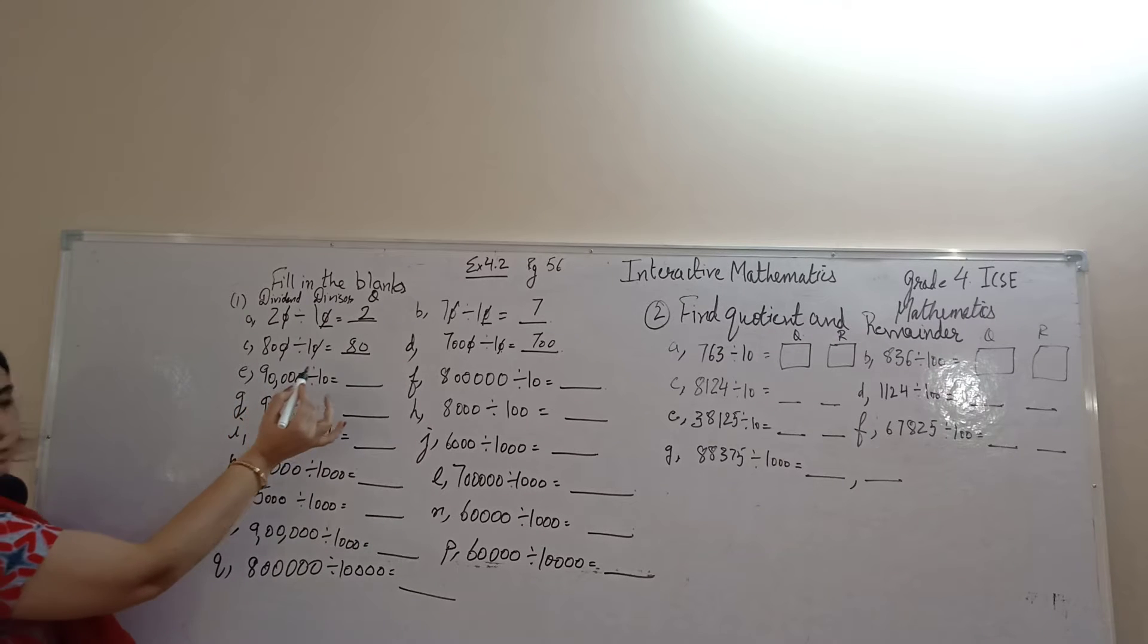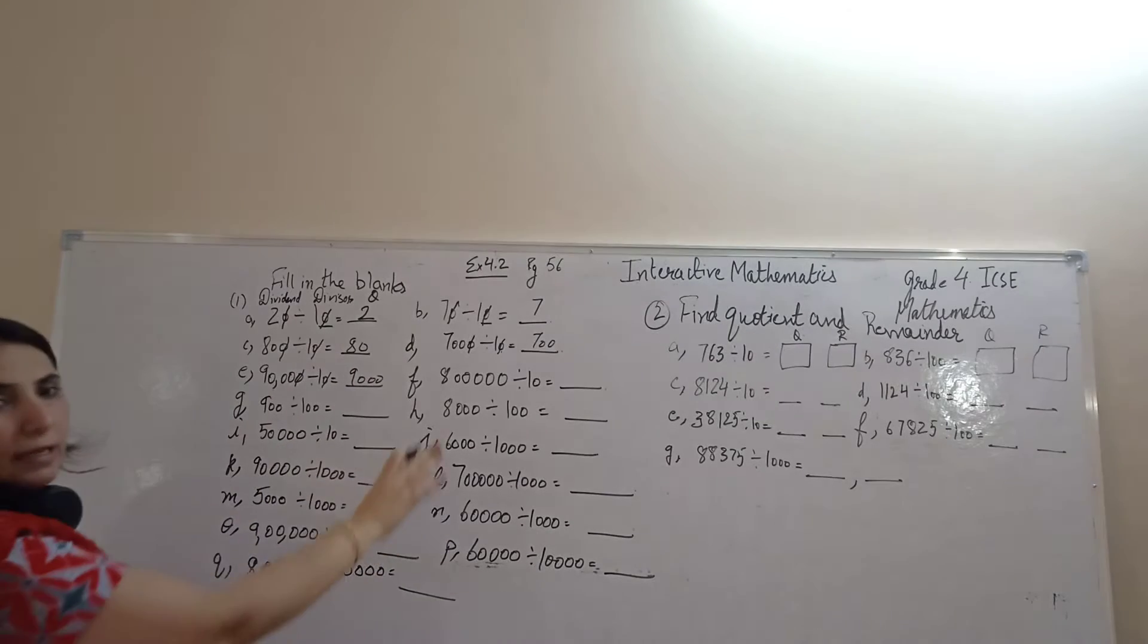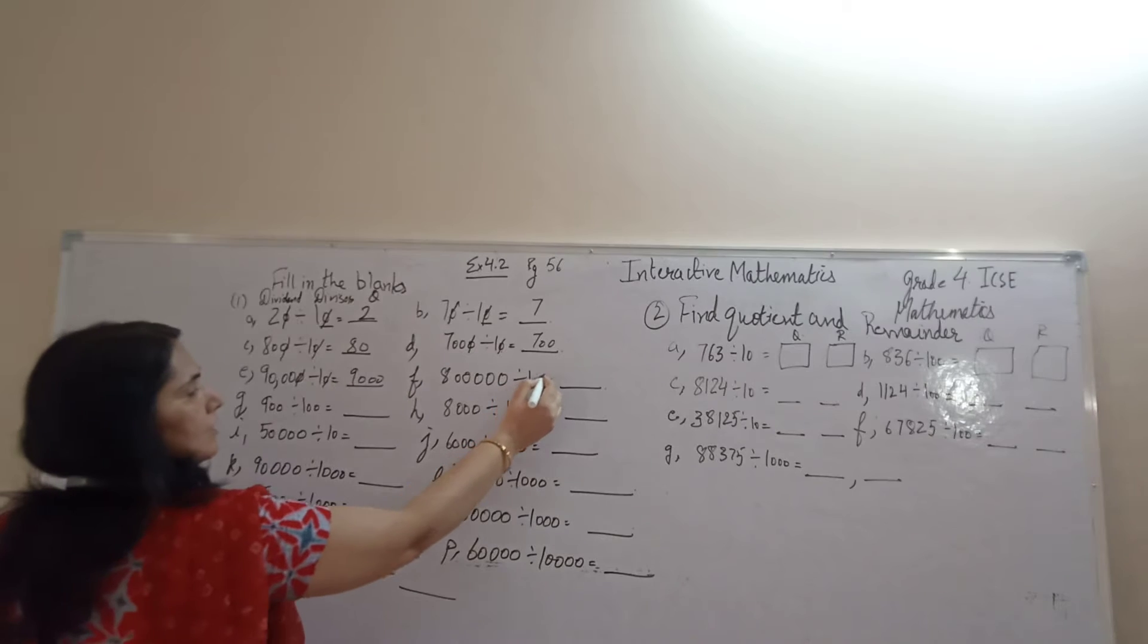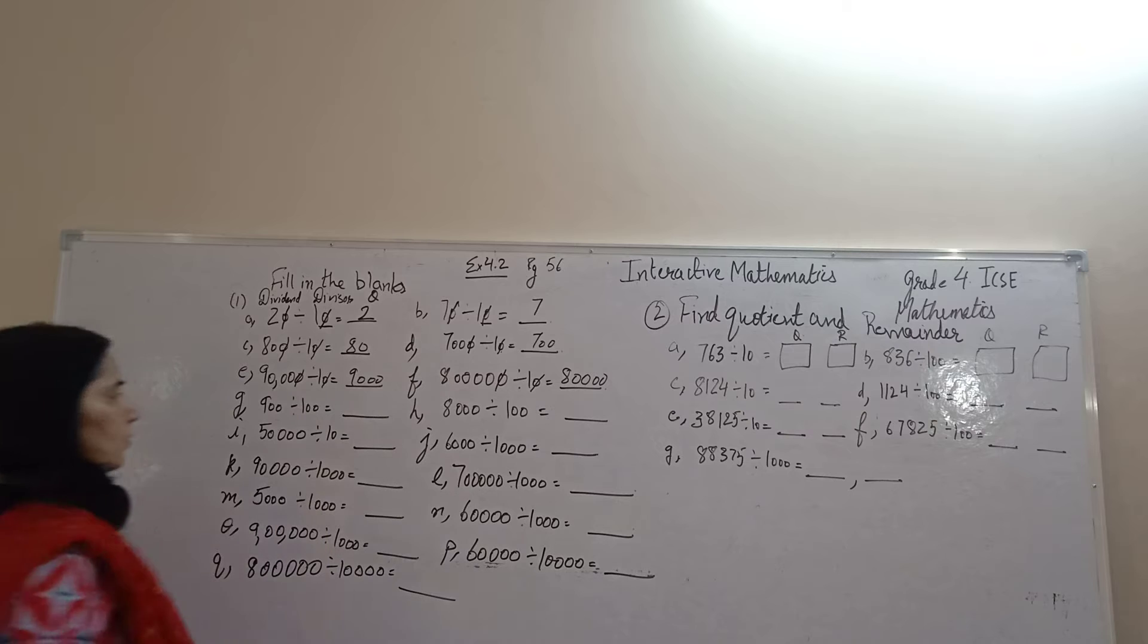90,000 divided by 10. We will remove 1, 0. It is 9,000. 800,000 divided by 10. 1, 0 removed. It is 80,000.